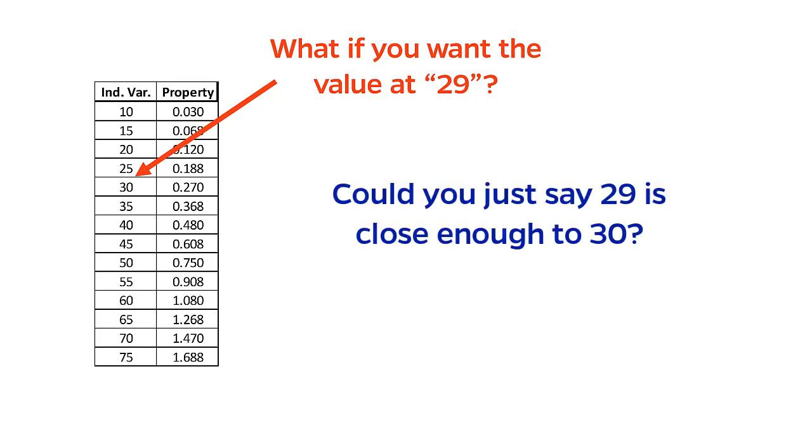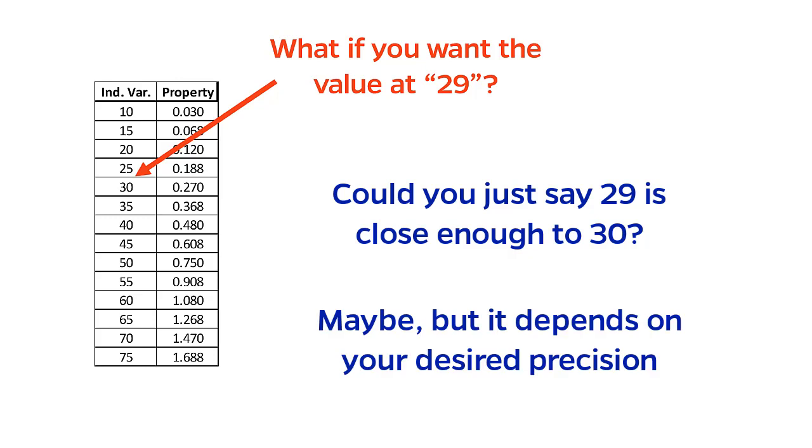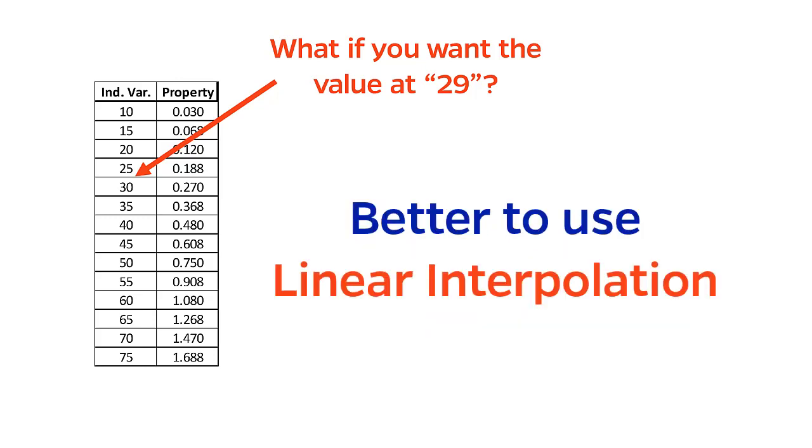In this situation, it's somewhat improper to just pick the closer one and say it's 30, but it depends on what kind of precision you need. A better strategy is to use linear interpolation, and this is what I prefer that you use in my class.